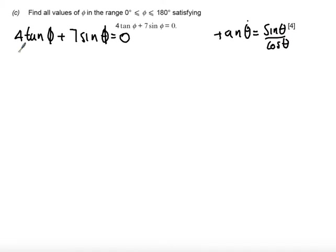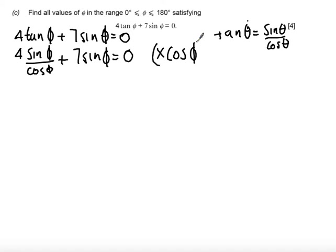So I could rewrite this as 4sinφ/cosφ + 7sinφ. When I look at this, I think, let's multiply everything through by cosφ to get rid of the denominator and then worry what to do.